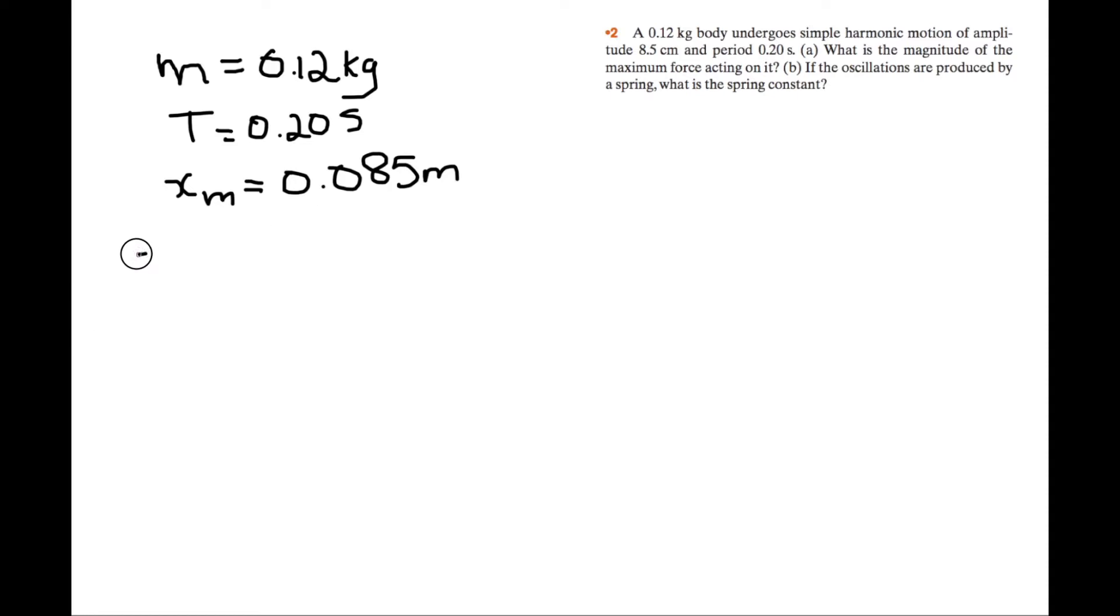So in part A, we're trying to find the maximum force in this motion. We use the equation F equals ma. When acceleration is maximum, that's when force is maximum. So acceleration amplitude is equal to the angular velocity squared times the amplitude of the displacement.